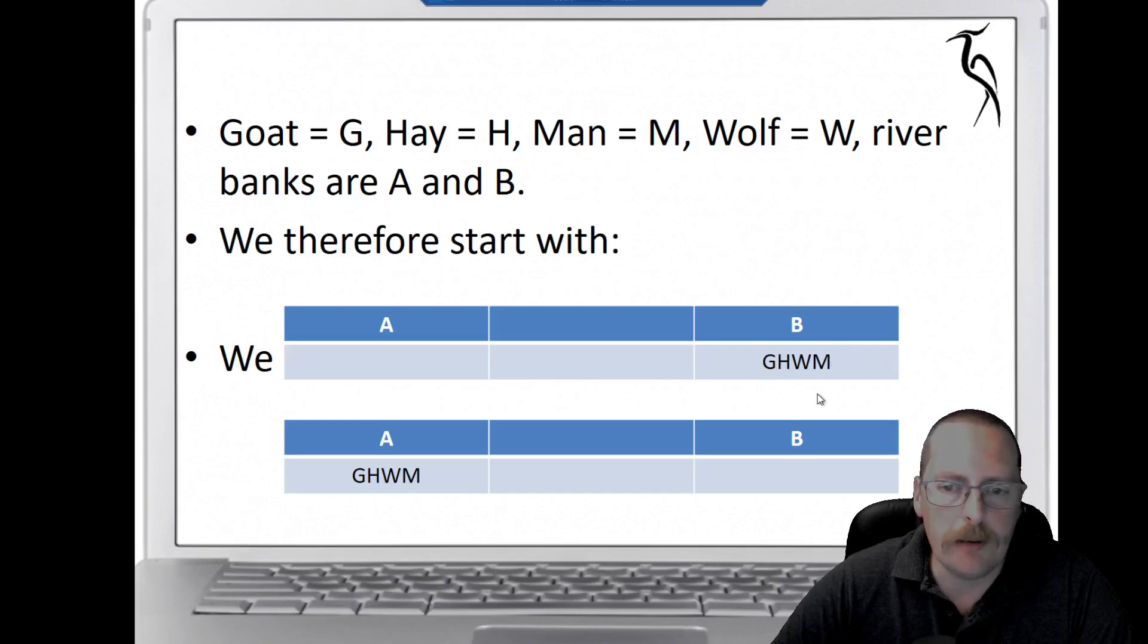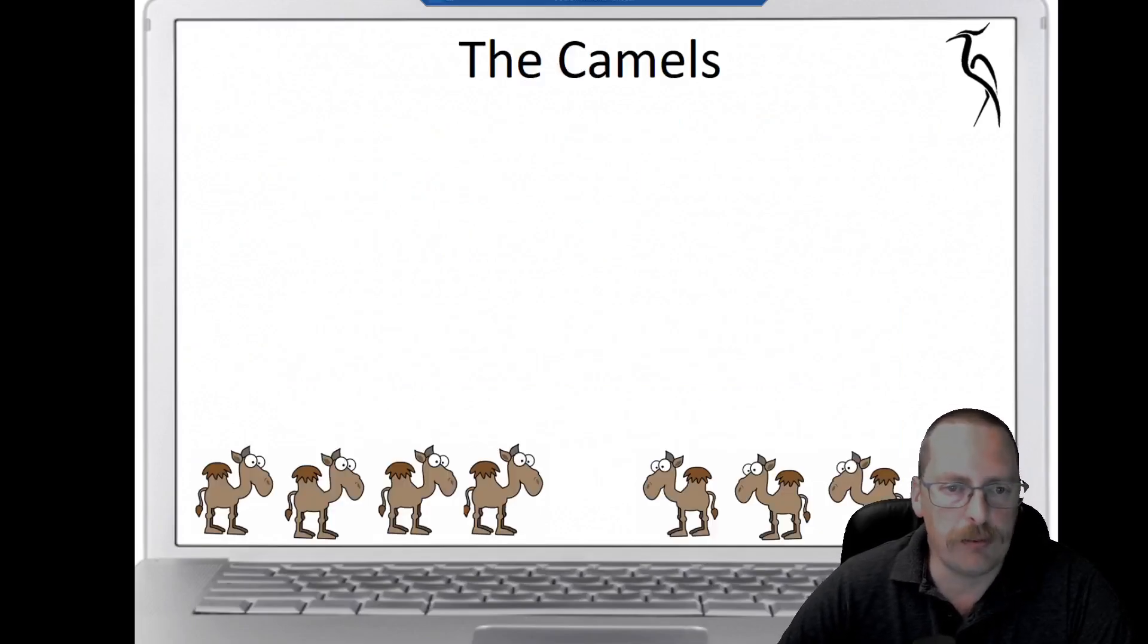We can put another row in here because the man is going to take the goat over the river. So we can have M and G in the middle, which represents the boat in the middle. Then we're going to move over to A to have the goat and the man. You can see how you can build this table up with lots of different rows representing where the items are at any one time. Your end point is having the goat, the hay, the wolf, and the man all over at bank A.